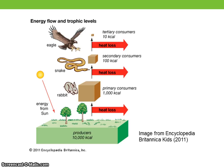Ecologists often simplify the representation of food webs by grouping species into broader categories that represent general feeding groups or trophic levels based on the source from which they derive energy.